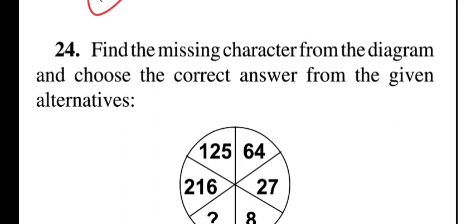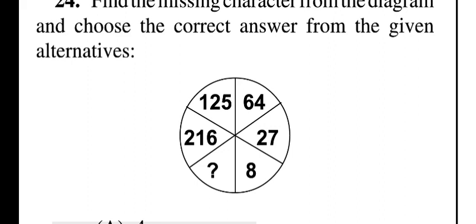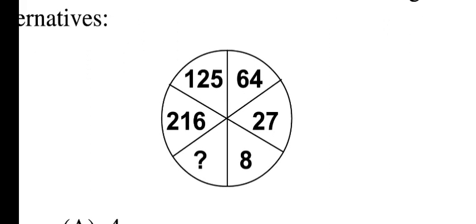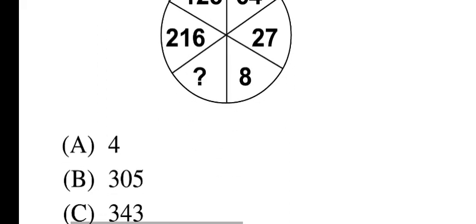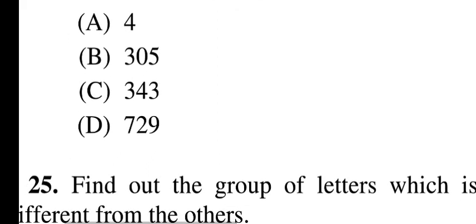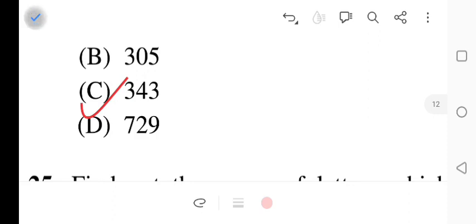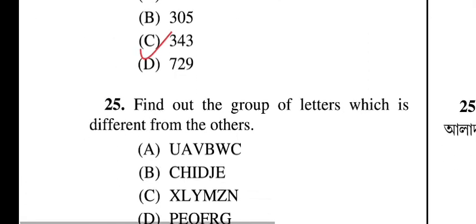Question twenty-four: find the missing character from the diagram. The figure contains values 216, 125, 64, 27, 8, and then what? Options: 4, 305, 343, 729, 25, 4. Question twenty-four, option C is correct: 343. Try to find out how.